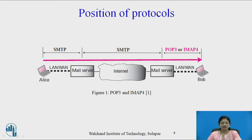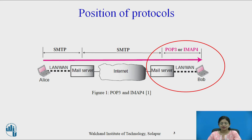Suppose Alice wants to send mail to Bob. Alice uses the SMTP protocol from her user agent to her mail server. Then SMTP is used a second time by Alice's mail server, and through the internet that mail is sent to Bob's mail server. Now, POP3 or IMAP protocol is used between Bob's mail server and Bob's user agent. So Bob retrieves the mail sent by Alice with the help of POP3 or IMAP.